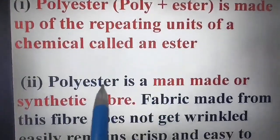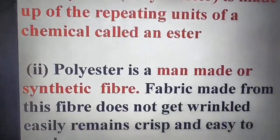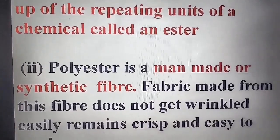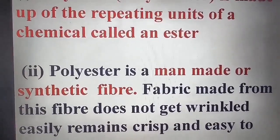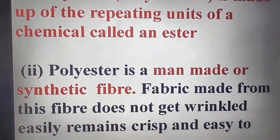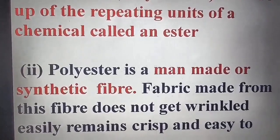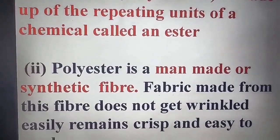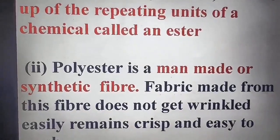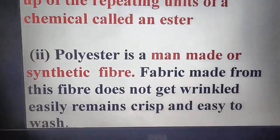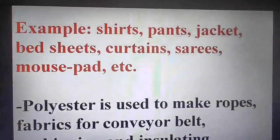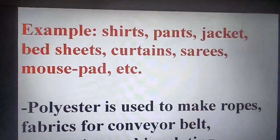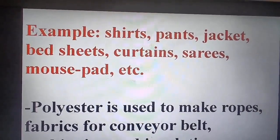Polyester — as the name suggests, poly plus ester — is made up of repeating units of a chemical called an ester. Polyester is a man-made synthetic fiber. Fabric made from this fiber does not get wrinkled, so you don't need to iron it repeatedly. It will remain crispy easily. It is also very easy to wash. Examples include shirts, pants, jackets, bed sheets, curtains, saris, and mouse pads.